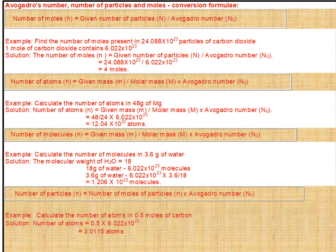Solution: n = given particles ÷ Avogadro's number = 24.088 × 10²³ ÷ 6.022 × 10²³ = 4 moles.